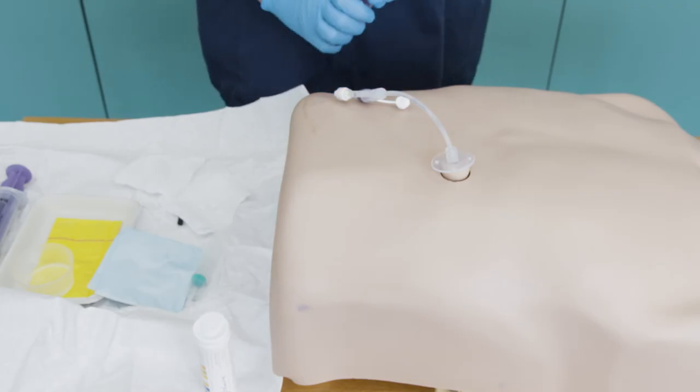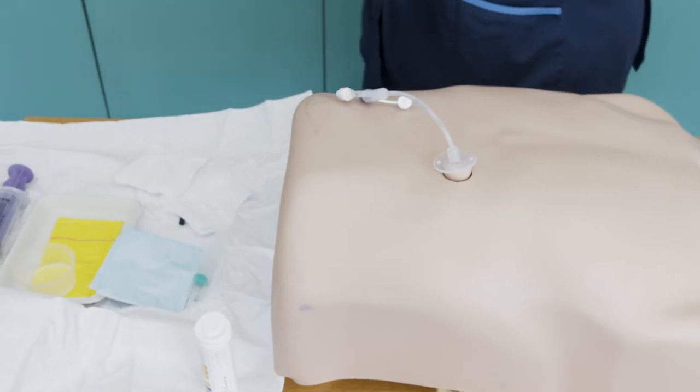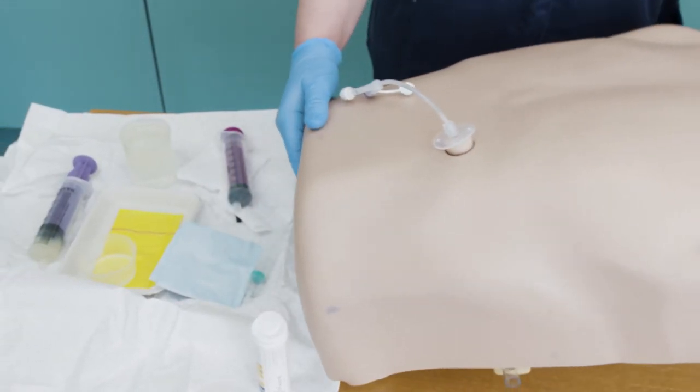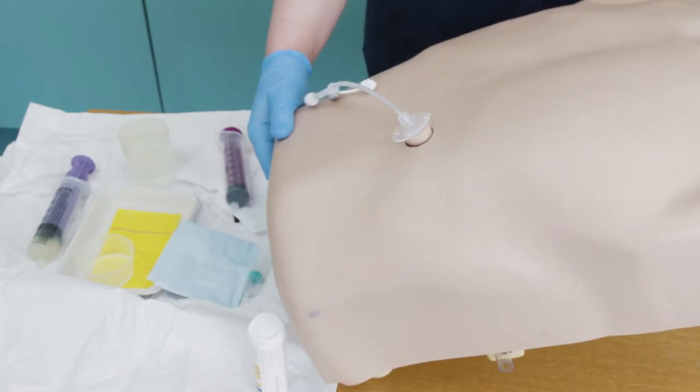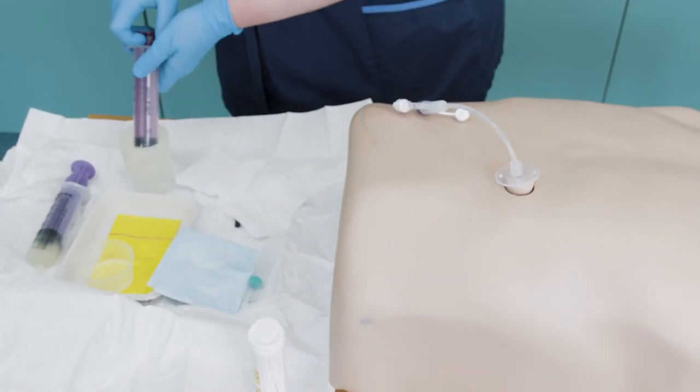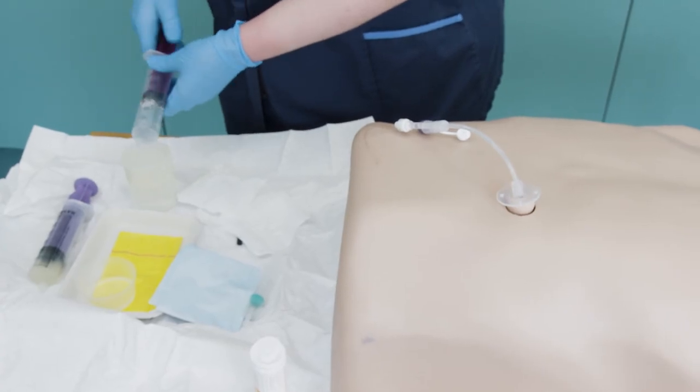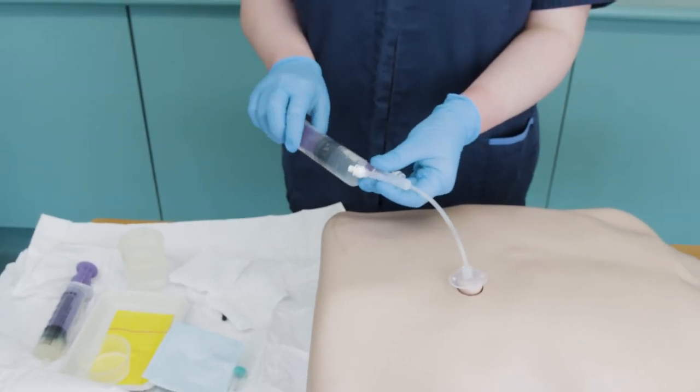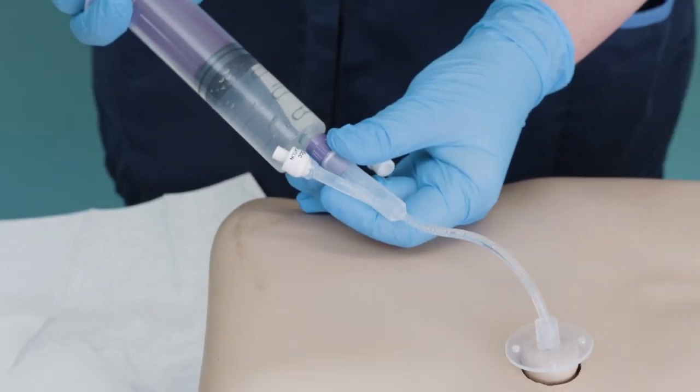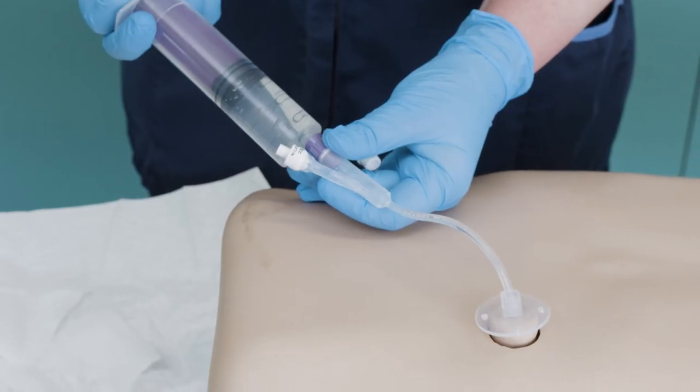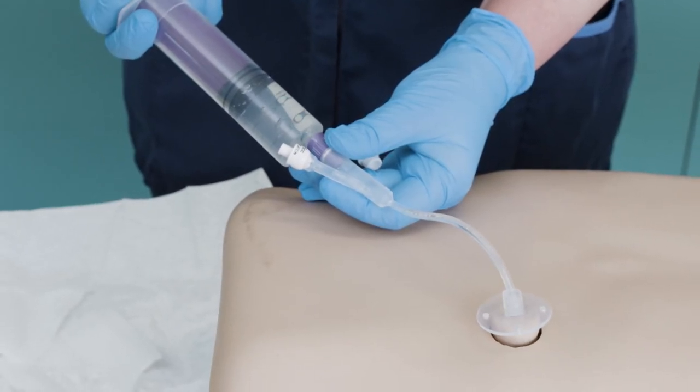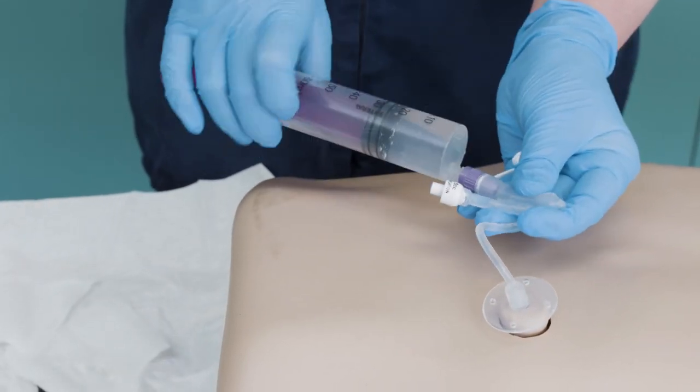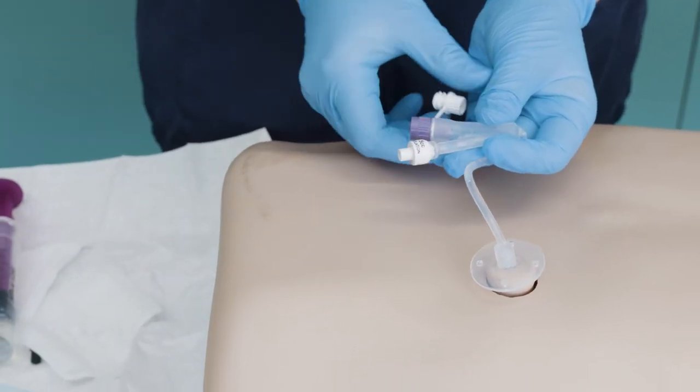Ensure the patient is now correctly positioned at a 30 degree angle or more upright, and then flush the tube with water. Note if the patient complains of any pain or discomfort, there is any resistance or leakage from the stoma site, and take appropriate action. The patient must remain in an upright position for at least one hour after the tube has been flushed.